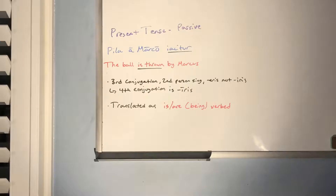The present tense in passive voice is translated as 'is' or 'are' (depending on subject-verb agreement), plus 'being' optionally, plus the past participial form of the verb. Adding 'being' helps emphasize that it is truly passive. You can say 'is being watched' or 'is watched' — either 'is/are being verbed' or 'is/are verbed' are completely acceptable.